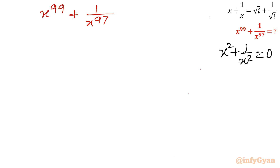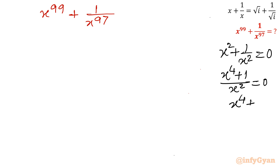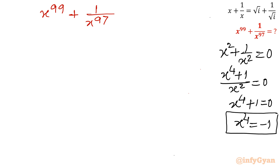How will we split this? We know only one key equation: x squared plus 1 over x squared equals 0. Taking LCM gives x to the power 4 plus 1 over x squared equals 0. In other words, x to the power 4 plus 1 equals 0, or x to the power 4 equals minus 1. This is an important result we will use.